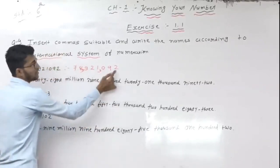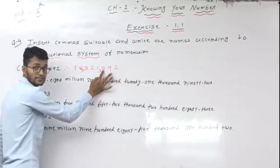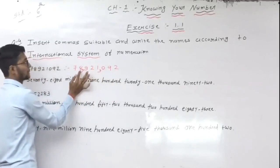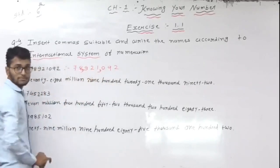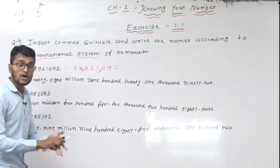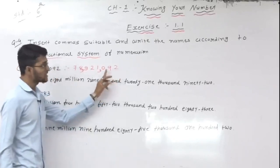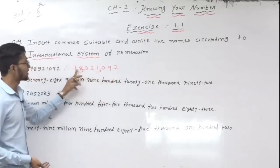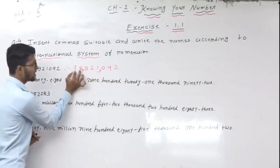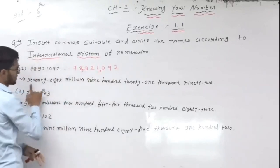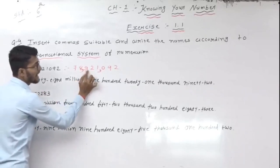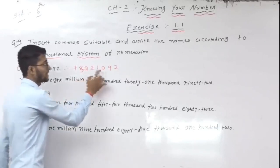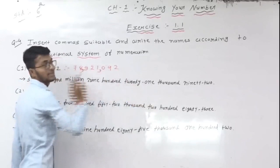International system place values: ones, tens, hundreds, thousands, ten thousands, hundred thousands, million, ten million. For 78921092: ten million and million digits combine as seventy-eight million. Then 9, 2, 1 gives nine hundred twenty-one thousand. And ninety-two. So: seventy-eight million, nine hundred twenty-one thousand, ninety-two.